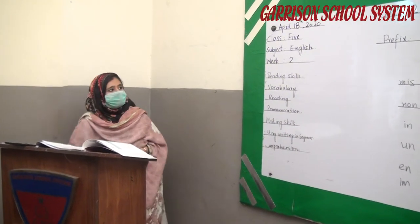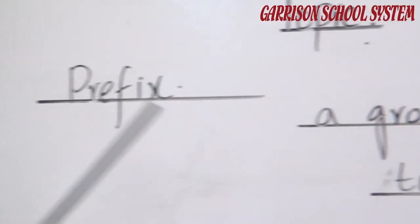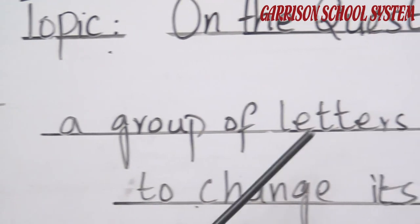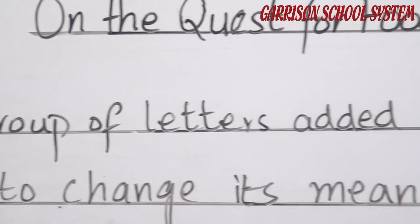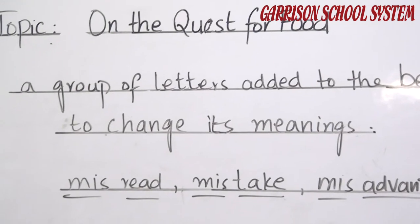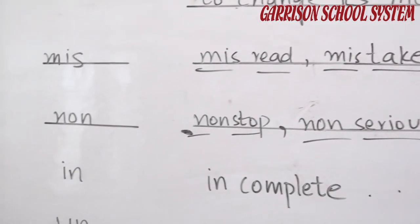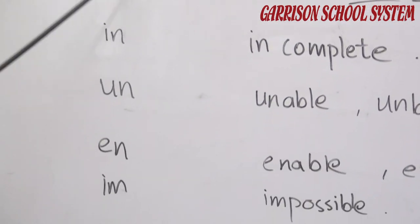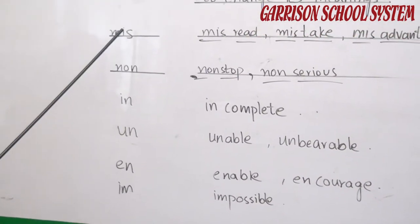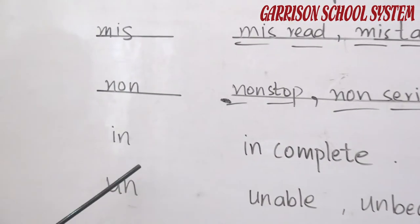Now coming to prefixes. What is a prefix? 'Pre' means before — a group of letters added to the beginning of a word to change its meaning. There are prefixes such as 'mis-', 'non-', 'in-', and 'un-'. 'Mis-' means wrong, 'non-' also means not, and 'un-' means unable to.